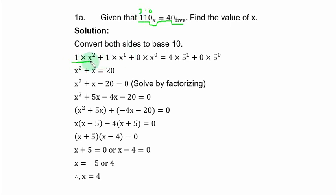So you have 1 times S squared plus 1 times S to power 1 plus 0 times S to power 0, equal to 4 times 5 to power 1 plus 0 times 5 to power 0. You have S squared plus S equal to 5 power 1 is 5 times 4 is 20. So what you have is a quadratic equation.